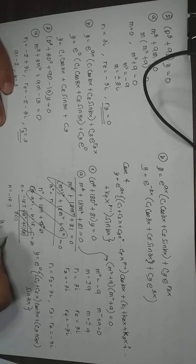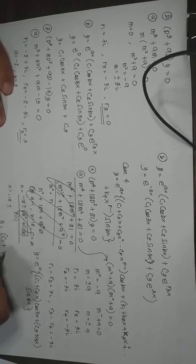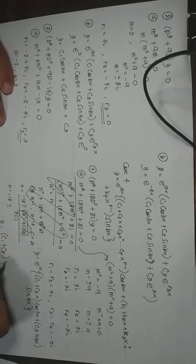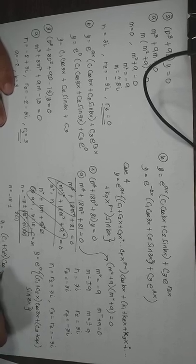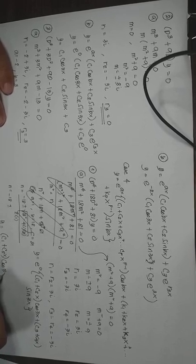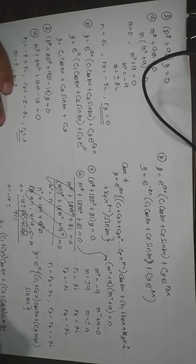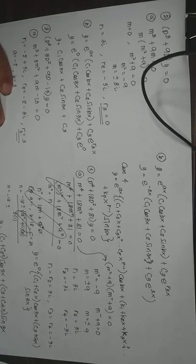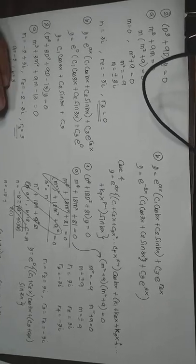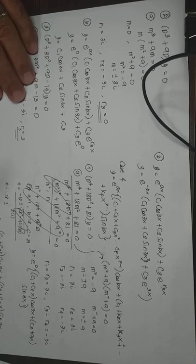The final solution is Y equal to (C sub 1 plus C sub 2 X) cosine 3X plus (C sub 3 plus C sub 4 X) sine 3X. That is the solution for example number 1 of case number 4.